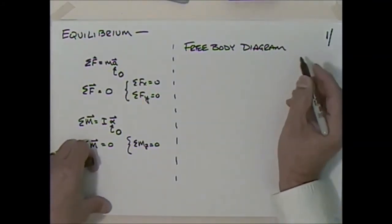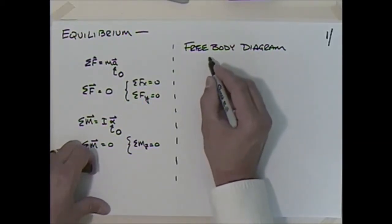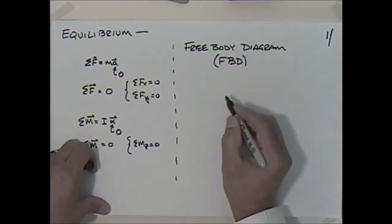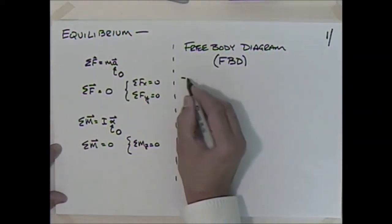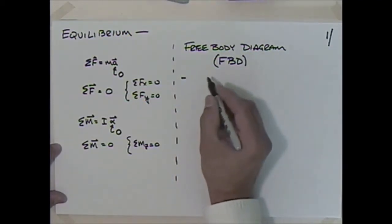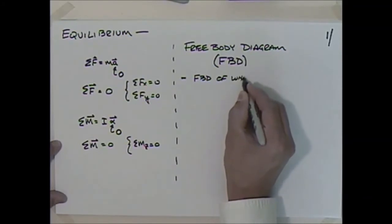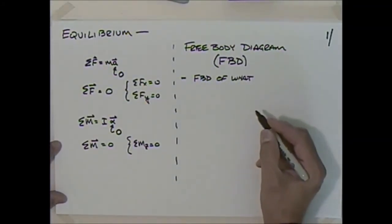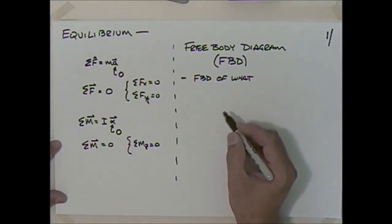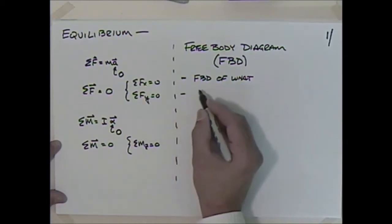We're going to use the free body diagram — or FBD for shorthand — an awful lot. In fact, for any problem from now on, we should always draw a free body diagram. It should become part of how we operate. There are some rules: the first is deciding what to draw the free body diagram of. We could draw it of the entire thing or just one part — it comes down to what information we're given and what we're looking for.